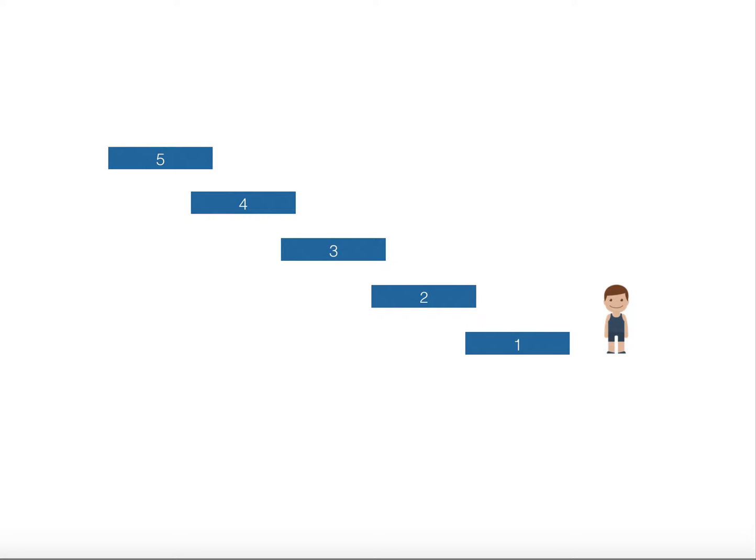Hi, myself Stalin. Today I'm going to talk about a problem called the staircase problem. It's really simple and interesting. We have a staircase with N steps — for this instance we have five steps. A person is standing next to the staircase and the idea is to climb the staircase.